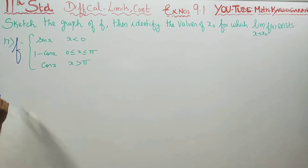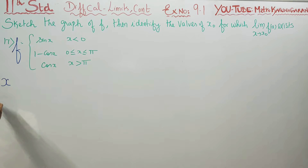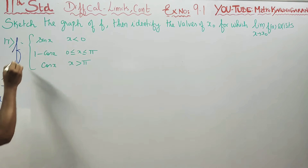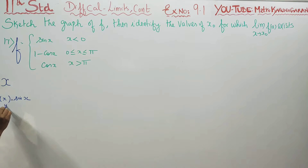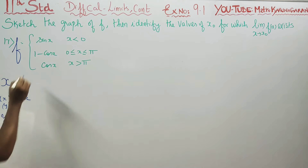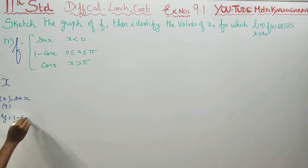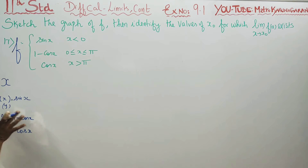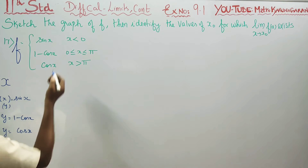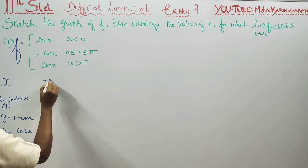First I am going to get values — the x values. First, f of x is sin x. This is my y. Second y is 1 minus cos x. All values less than 0, less than 0.1 minus pi.